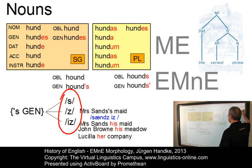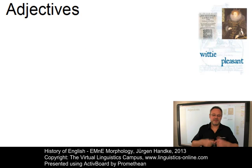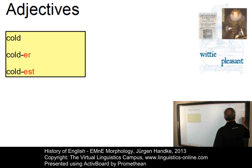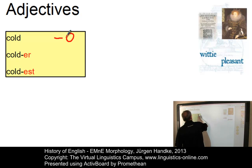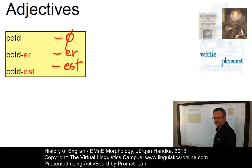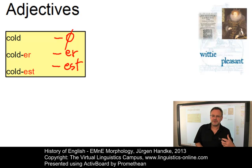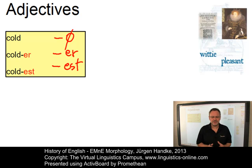Let's now look at adjectives. By the end of the Middle English period, adjectives had lost all their inflectional endings except the suffixes for gradation — the base form with no affix, then the comparative form and the superlative forms. The rules for adjectival gradation, however, had not fully stabilized. For example, the use of the comparative and the superlative forms either as inflected or as periphrastic forms had not yet reached its present-day English rigidity.